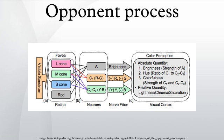In the opponent process theory, fatigue of pathways promoting red produces the illusion of a green square.